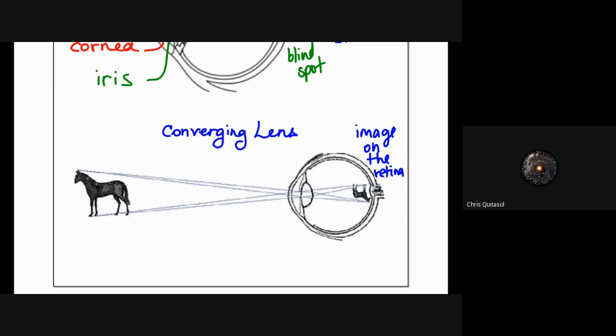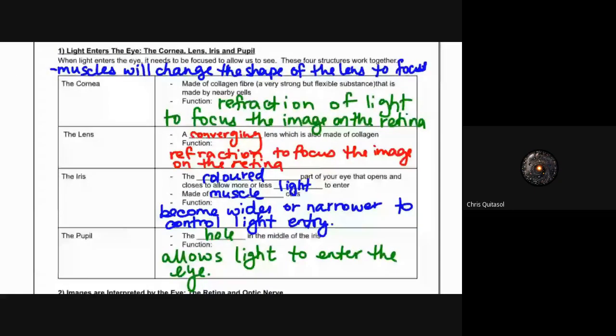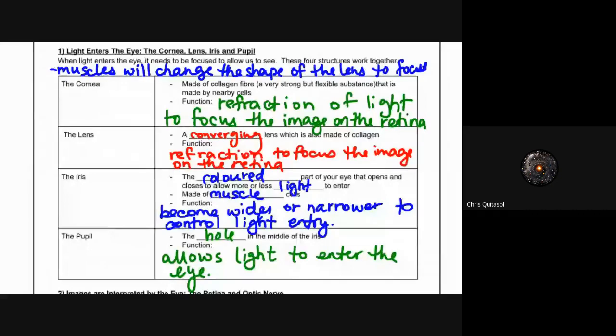There's a couple of pieces of information with regards to the anatomy of the eye that I want to get into. How light enters the eye specifically through the cornea, lens, iris, and pupil. If you take a look at your eye in low light versus a large amount of light, you'll start to notice that there are muscles that change the shape that allow for the eye to react to its circumstances and environment. The cornea is made out of collagen fiber, which is very strong and flexible, and its main goal is to refract light to focus the image on the retina.